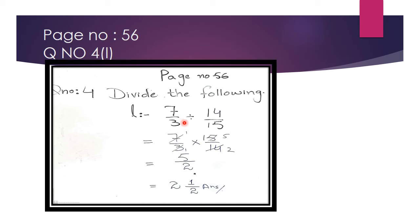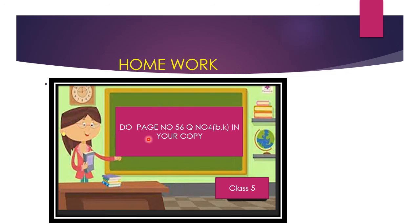This is Part L: 7/3 divided by 14/15. We have 7/3, and when dividing, we multiply by the reciprocal of 14/15, which is 15/14. Now we cancel: 7 and 14 — 7 goes into 14 twice, giving 1 and 2. Also, 3 and 15 — 3 goes into 15 five times, giving 1 and 5. After simplification, we multiply: 5/2, so the answer is 5/2. This completes page number 56, question number 4.